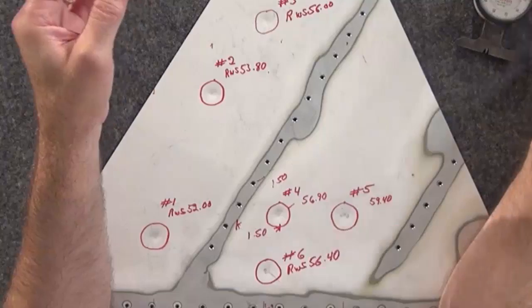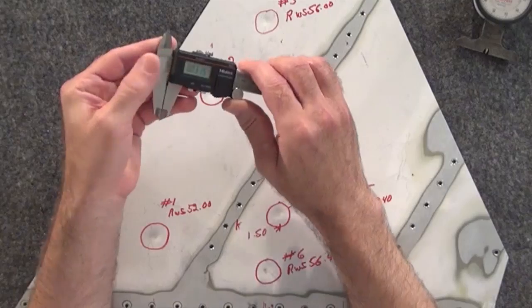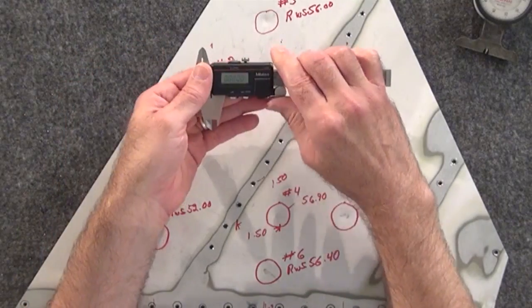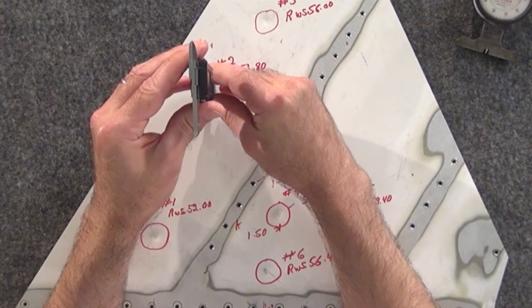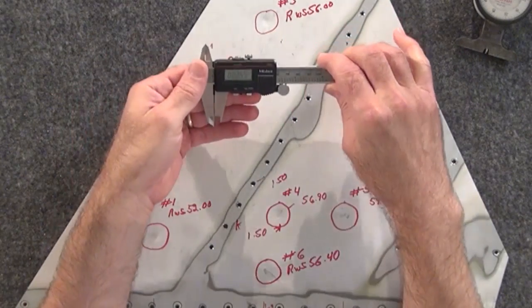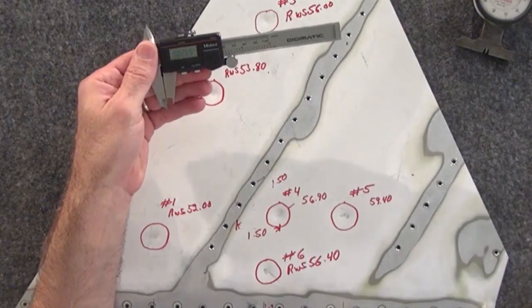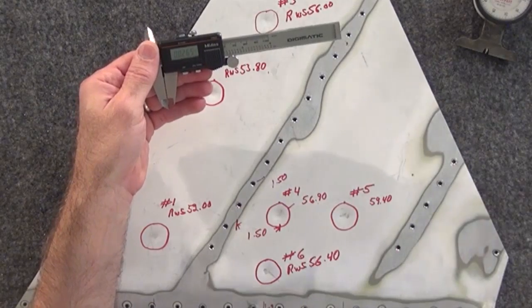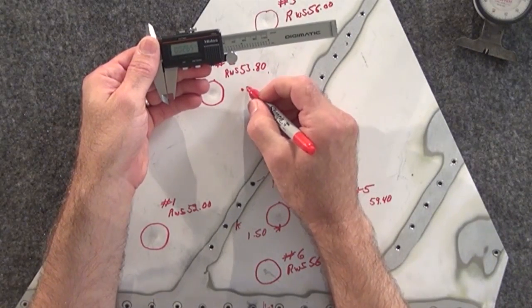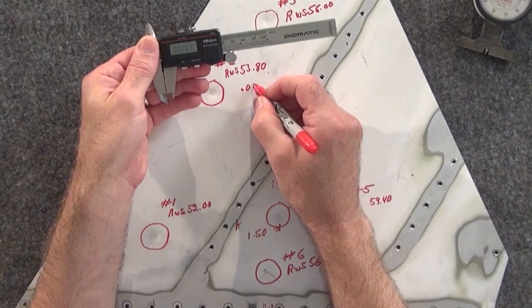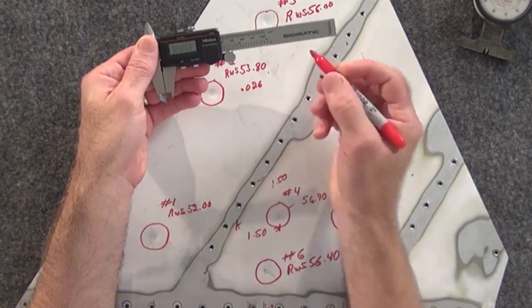Now here we're going to use the digital caliper. Okay, we'll zero it, place it in the damage, and we're now showing 26.5. And we'll express that as 0.026, okay.